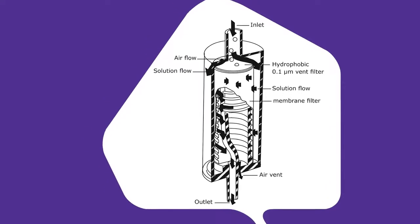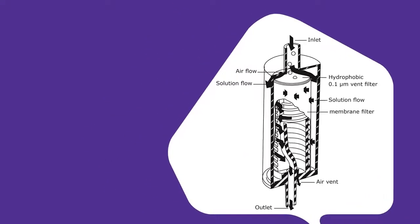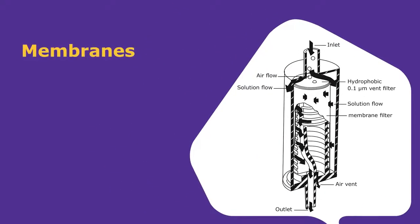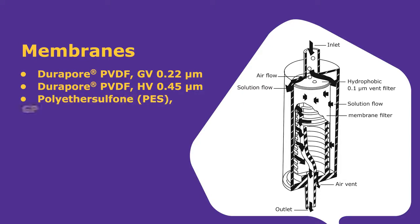The packaged pre-sterilized device contains three different membranes from low binding PVDF, GV or HV, or polyether sulfone, which has higher throughput capabilities to process up to 2 liters, especially helpful when samples contain serum.